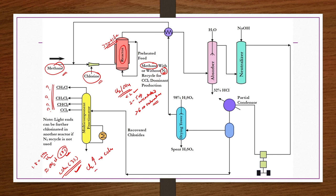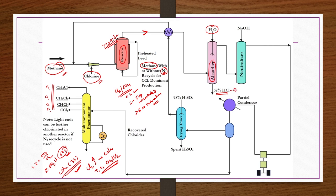After the reaction, the product gas mixture passes through a heat exchanger and then to an absorber where water is sprayed to collect 32% aqueous HCl. If dry HCl is required, azeotropic or extractive distillation is performed to obtain dry HCl gas, which can be recycled. The remaining product mixture is then scrubbed with NaOH solution in a neutralization section to remove CO2 and any traces of HCl.